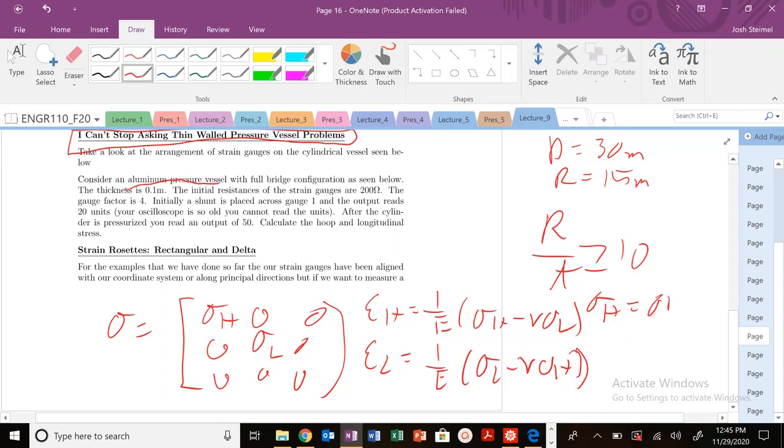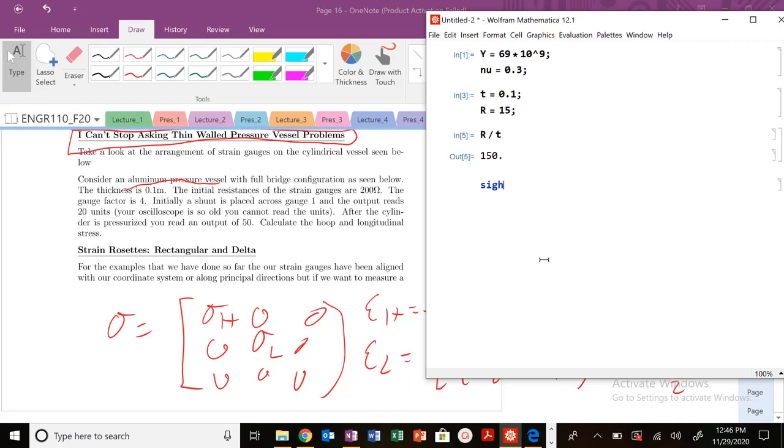I also know my sigma hoop is equal to ΔP times R over T. And I know that my longitudinal is just going to be sigma hoop divided by 2. That's it. So I can already start to plug and write some of those expressions. I'm going to go ahead and do that.